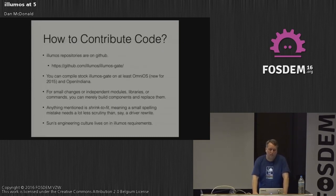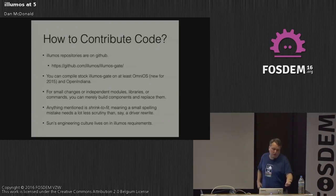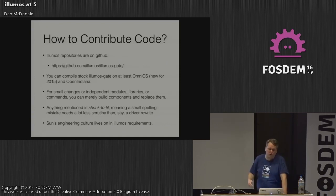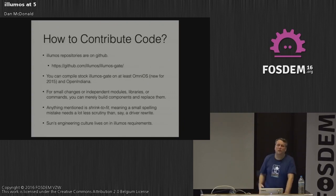If you want to contribute code, we're on GitHub and you can compile stock Illumos gate on at least OmniOS and OpenIndiana; other distros are going to follow suit. Each distro usually has its own child of Illumos gate — for example OmniOS has illumos-omnios. For small changes or an independent module, you can build the individual component to test it. Code review and integration processes in Illumos are a shrink-to-fit thing: a typo in a man page won't require much review, but contributing a new device driver will require more scrutiny.